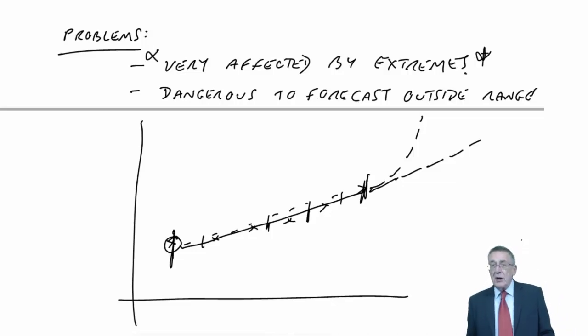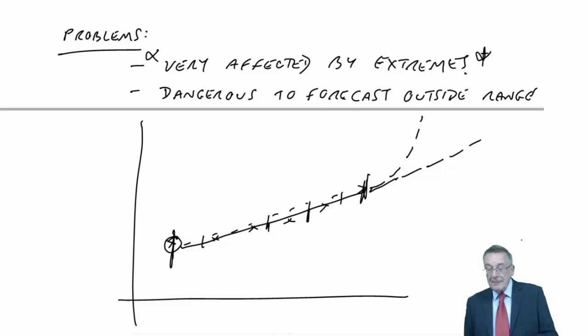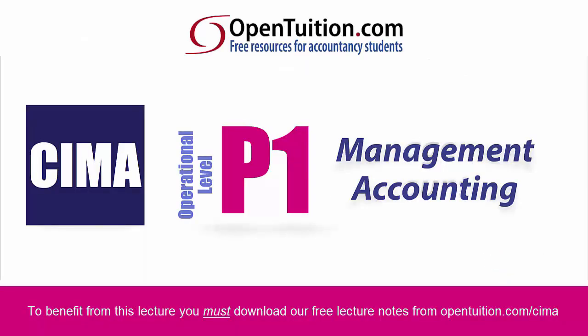Anyway that's the high-low approach. As I've said, on the one hand it is very easy, it's very quick, but this problem of being affected by extremes, the highest or the lowest being unusually high or low, which is why a better approach is the one I'll deal with in the next lecture which is called regression analysis.